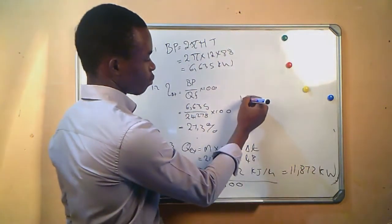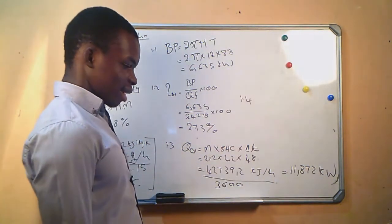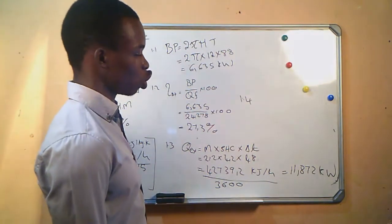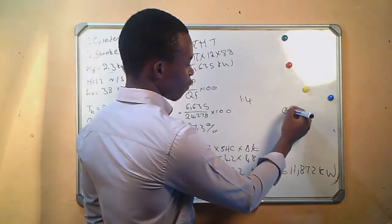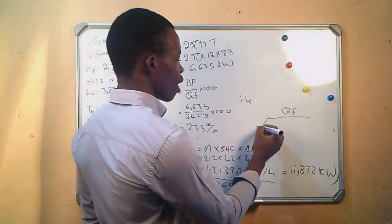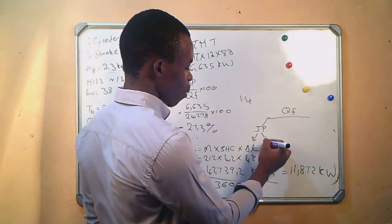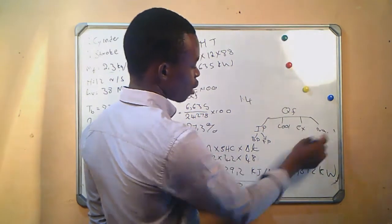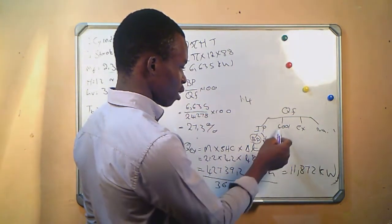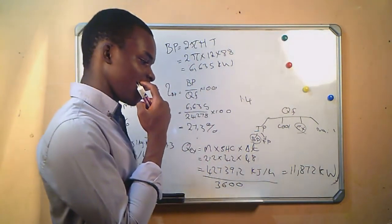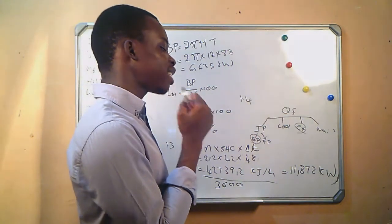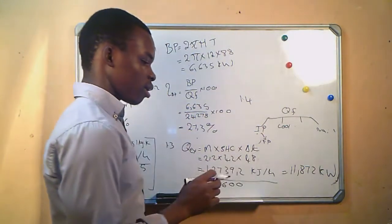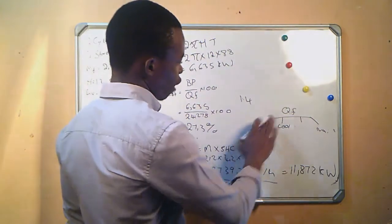Question 1.4: the energy carried away by the combined effects of the jacket cooling water, friction and radiation. We know the energy balance is: fuel energy = indicated power (brake power + friction power) + cooling + exhaust + remainder. We have already calculated the fuel energy and the exhaust. To find the combined remaining energy, we subtract brake power and exhaust from the total fuel energy.